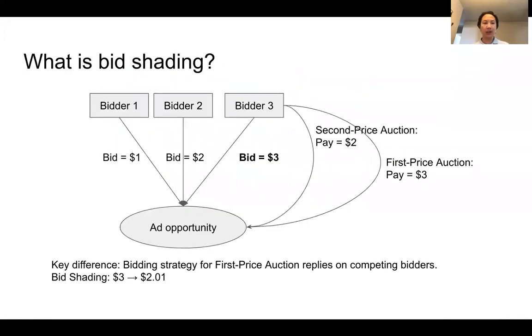First, let's clarify the concept of bid shading. Bid shading is the process of reducing the bid price when we go from second price auction to first price auction.